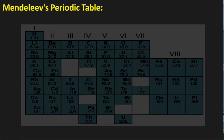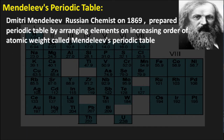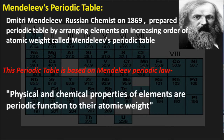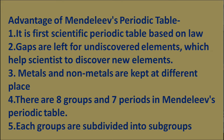Mendeleev's periodic table: Dmitri Mendeleev, a Russian chemist, in 1869 prepared a periodic table by arranging elements in increasing order of atomic weight, called Mendeleev's periodic table. This periodic table is based on Mendeleev's periodic law, which states that physical and chemical properties of elements are a periodic function of their atomic weight. Atomic weight is the main fundamental property of an element on which its properties depend.